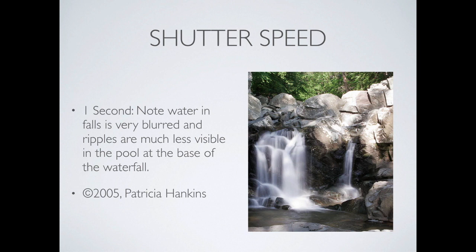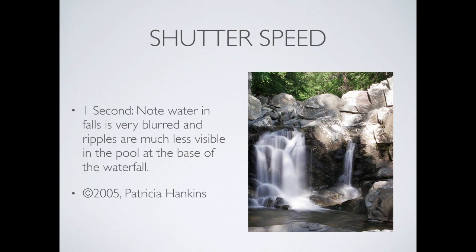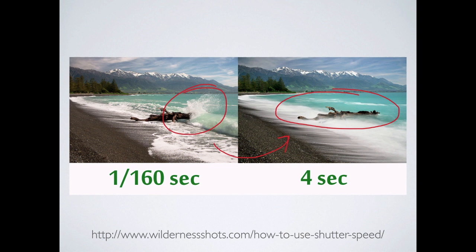Comparing side by side: at 1/60th of a second you see frozen spray, and at a four-second exposure everything that's moving becomes completely blurred and smooth. There's nothing to say one is better than the other — both are great images. It's a matter of preference and intent: are you trying to show blur through time and movement, or freeze it as an instant?